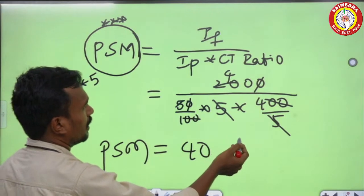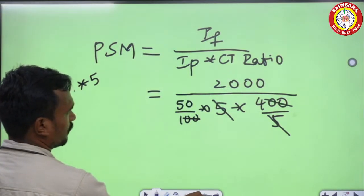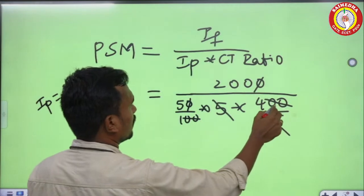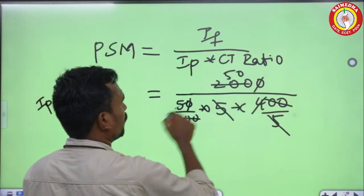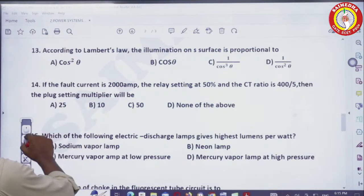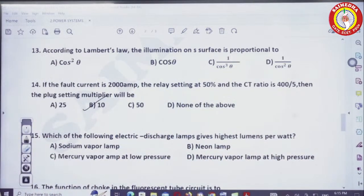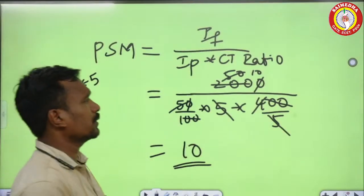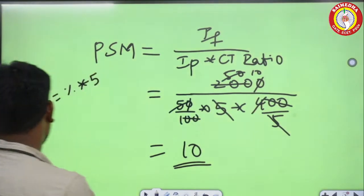I made a small calculation mistake. The correct calculation: two zeros cancel, 5 and 5 cancel, and 400/4 = the remaining factor gives the answer of 10. So the plug setting multiplier is 10. Calculations are very important — don't make these mistakes.